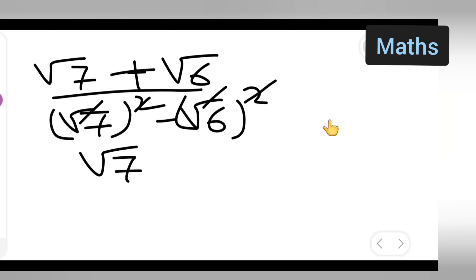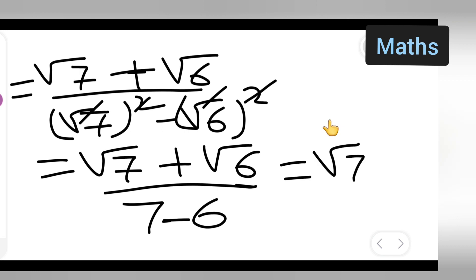So what will remain is root 7 plus root 6 upon 7 minus 6. So basically it will be root 7 plus root 6 upon 1, which is your answer.